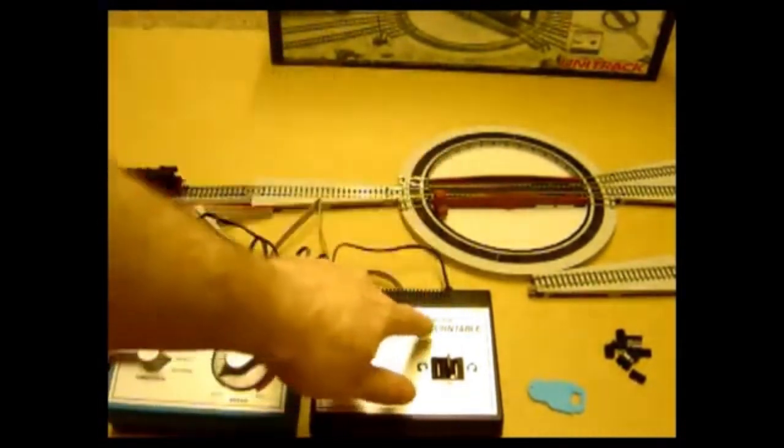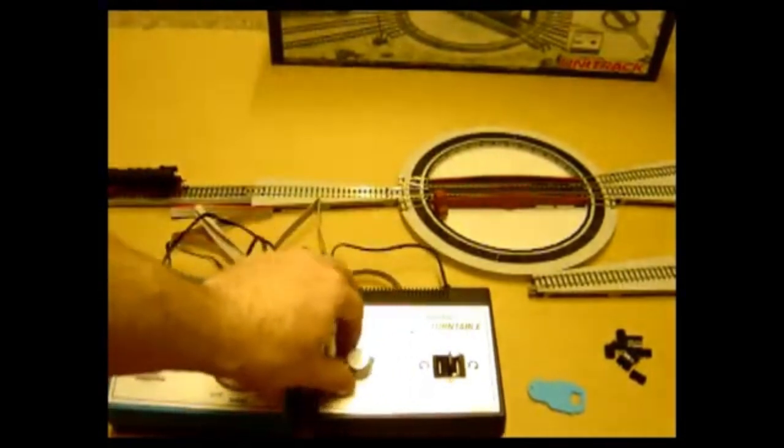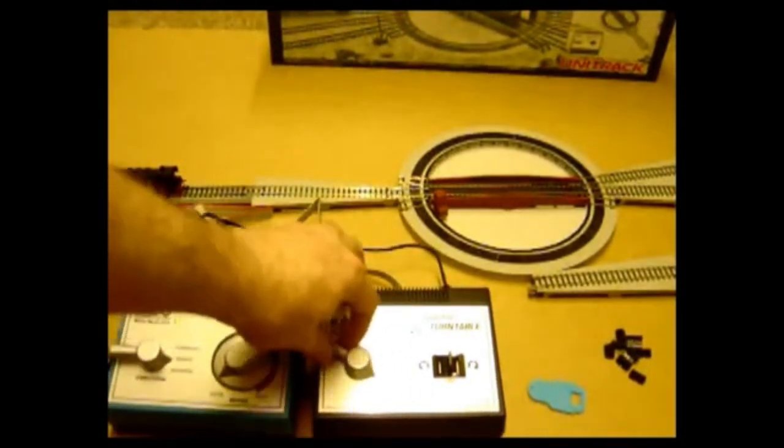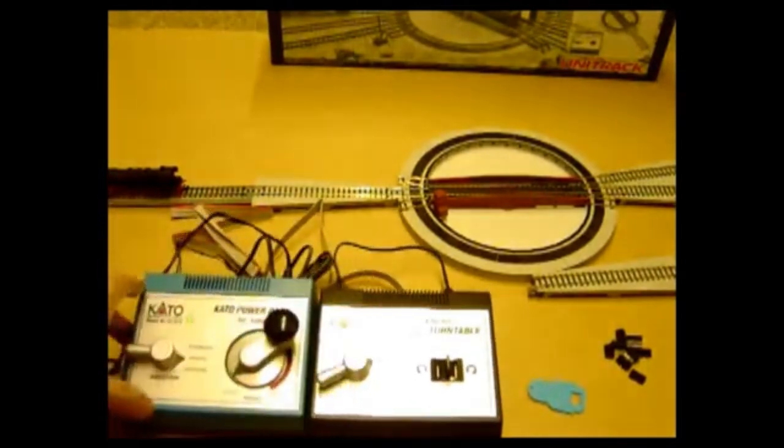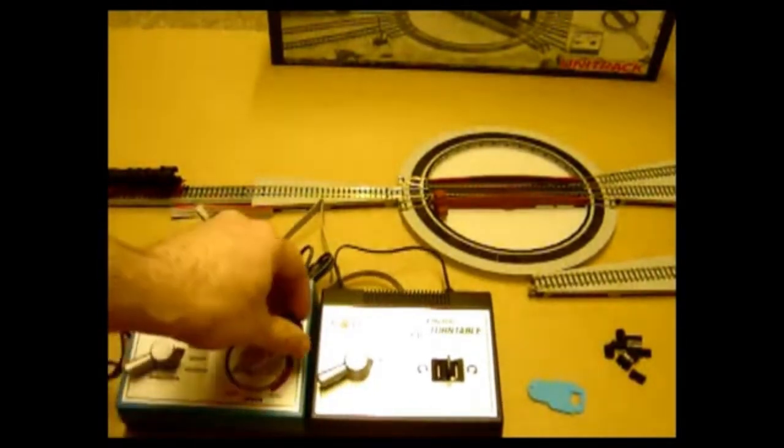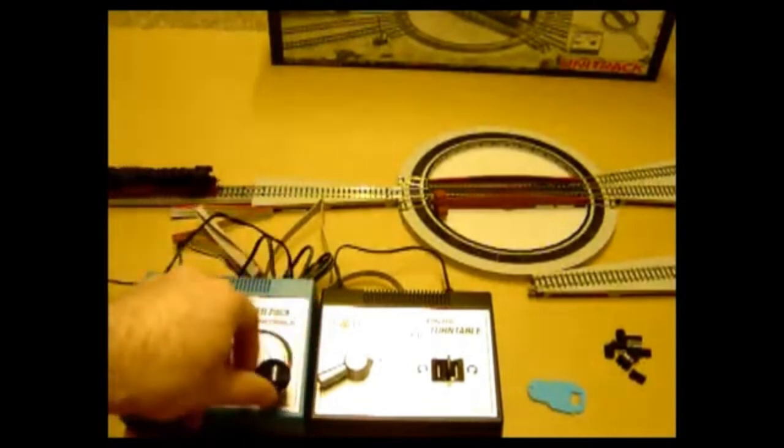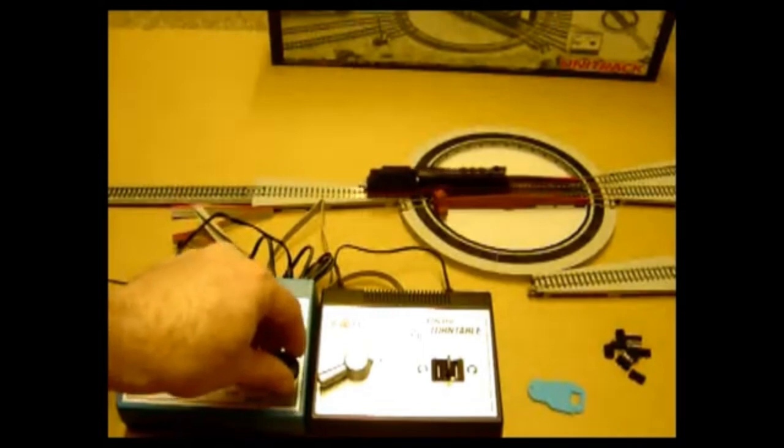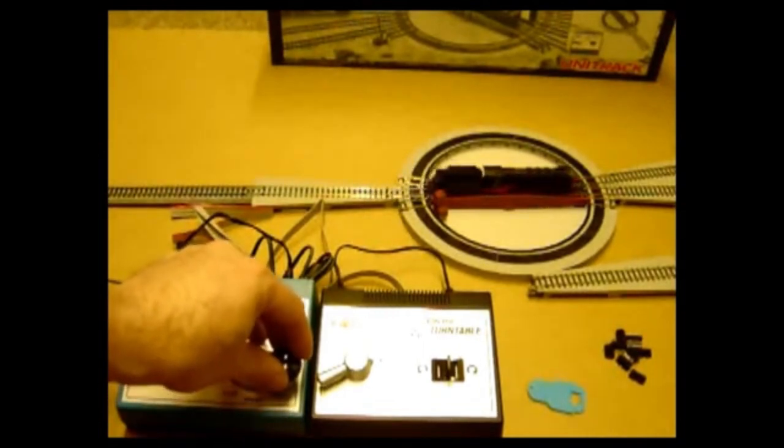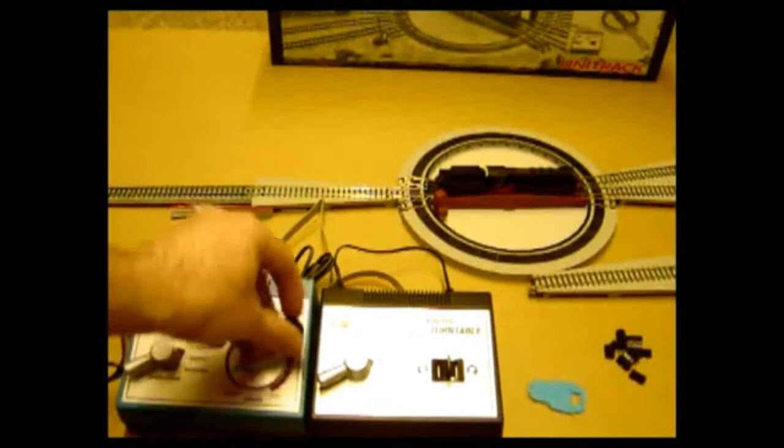If you're running onto the turntable from the hut end, turn it to the black. If you're running on from the other end, turn it to the white. Put the power on to the black there. Put my loco into forward. Driving in. There we are.